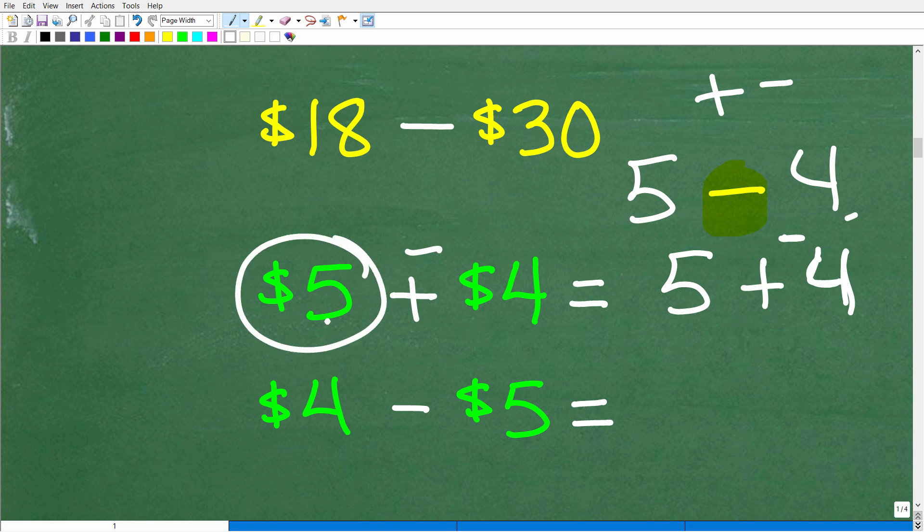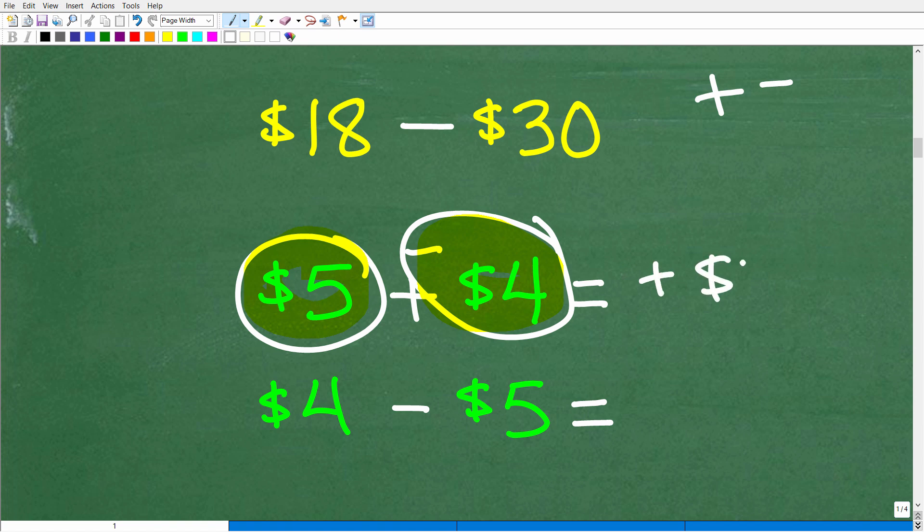All right, so here our positive number is greater than our negative number. And when you have a positive value, it's like you have money. Negative values is debt. You owe money. So if you have $5 and you owe someone $4, well, how much money do you have? Well, you have a positive $1.